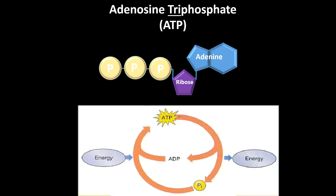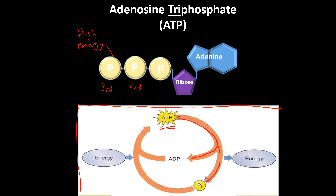Here's what I want you to sketch in your notes: show a molecule of ATP and label the bond between the second and third phosphate as high energy. Also sketch this diagram showing that when ATP's phosphate group breaks off, we're left with ADP, a phosphate, and energy is released for the cell to use. Then when we eat food, that ADP and phosphate are reattached, energy is stored, and we're back to ATP.